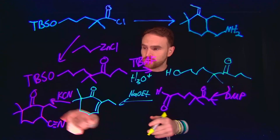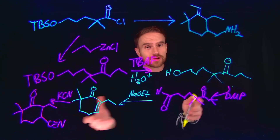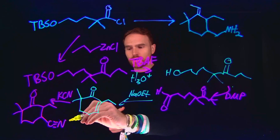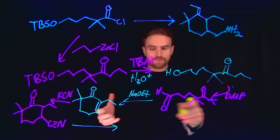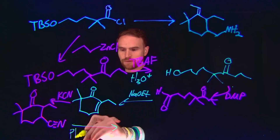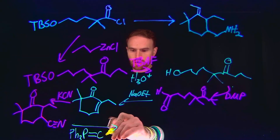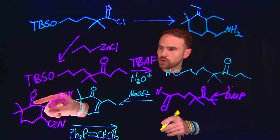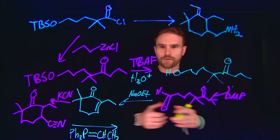The next thing that we need to do is turn this ketone into an alkene with a methyl group on it. The interconversion between alkenes and ketones you learned about in organic chemistry uses a Wittig reagent. That Wittig reagent is actually a phosphorus ylide, which contains a double bond to carbon and also our methyl group coming off the side. And that's how we interconvert this ketone into this alkene, which we need in our final product.